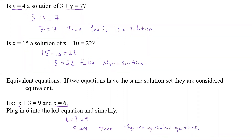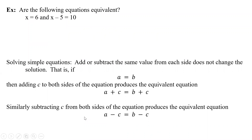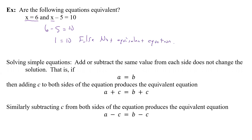That's also called the check — to see if it really works or not. Here's an example: x equals 6 and x minus 5 equals 10 — are they equivalent? We plug 6 into the second equation: 6 minus 5 equals 10. Well, 6 minus 5 is 1, and 1 does not equal 10 — that's false. So they're not equivalent equations, and we've also shown that x equals 6 is not a solution to x minus 5 equals 10.